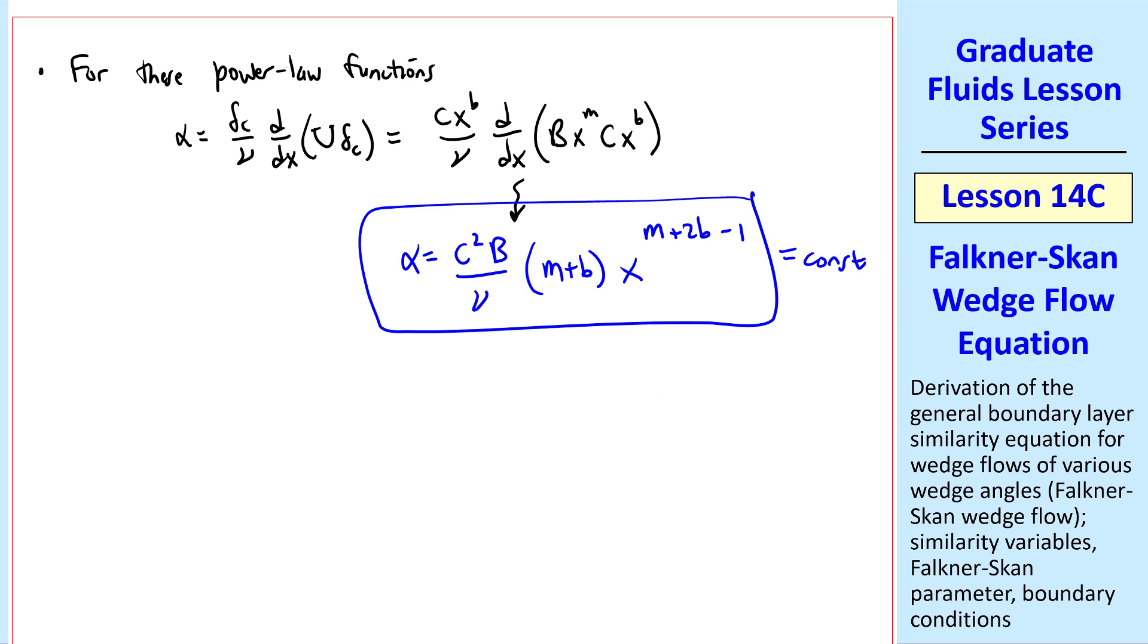And this alpha must be a constant. Well, the only way that happens, since these are all constants, is if this exponent of x is 0, since x to the 0 is 1. Thus, m plus 2b minus 1 must equal 0.